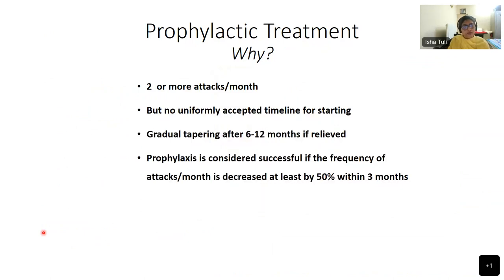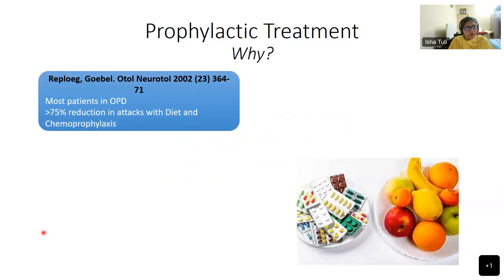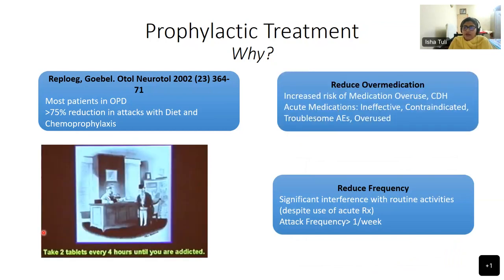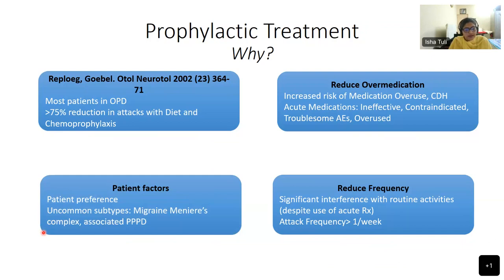Prophylactic therapy is indicated when there are more than 2 attacks per month, though there is no uniformly accepted timeline. Once treatment is started, it should be given for 6 months before tapering is attempted, and is considered successful if attack duration and frequency reduce by at least 50%. Most OPD patients have more than 75% reduction in attacks with diet and pharmacological prophylaxis. Other indications for prophylaxis include significant interference with routine activity despite acute treatment, attack frequency more than once per week, severe medication overuse, contraindications to acute treatment, or the presence of uncommon subtypes.